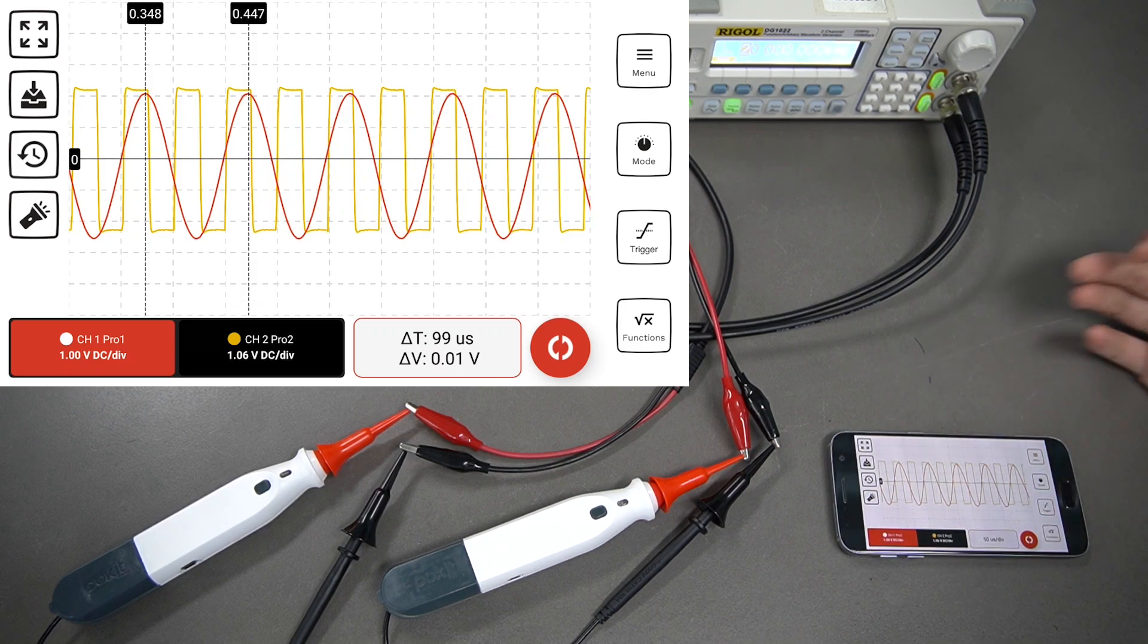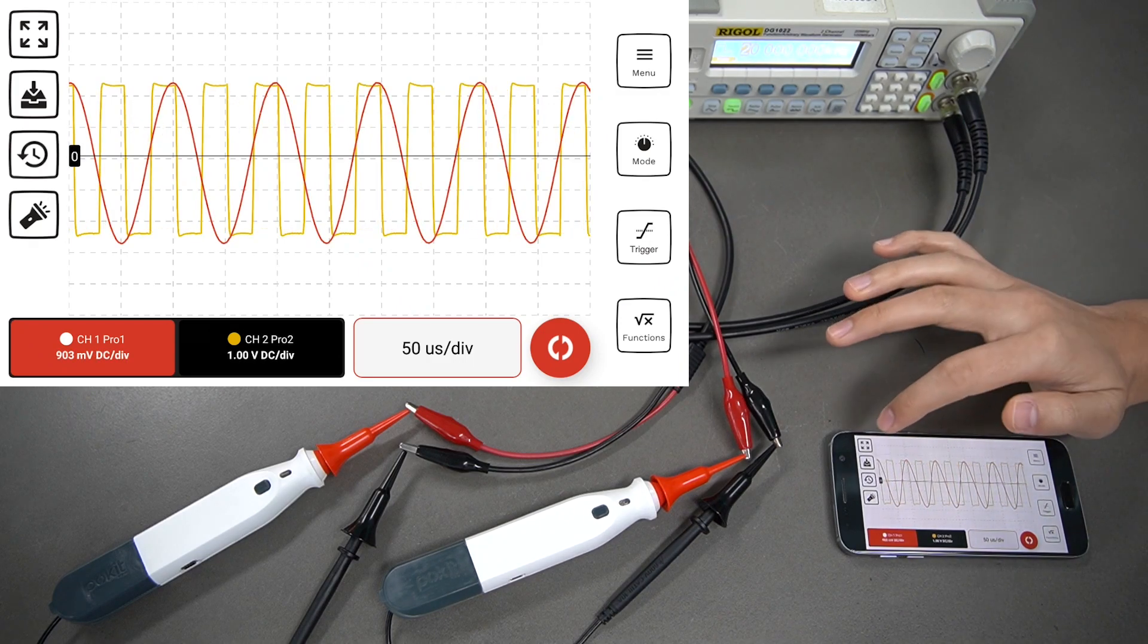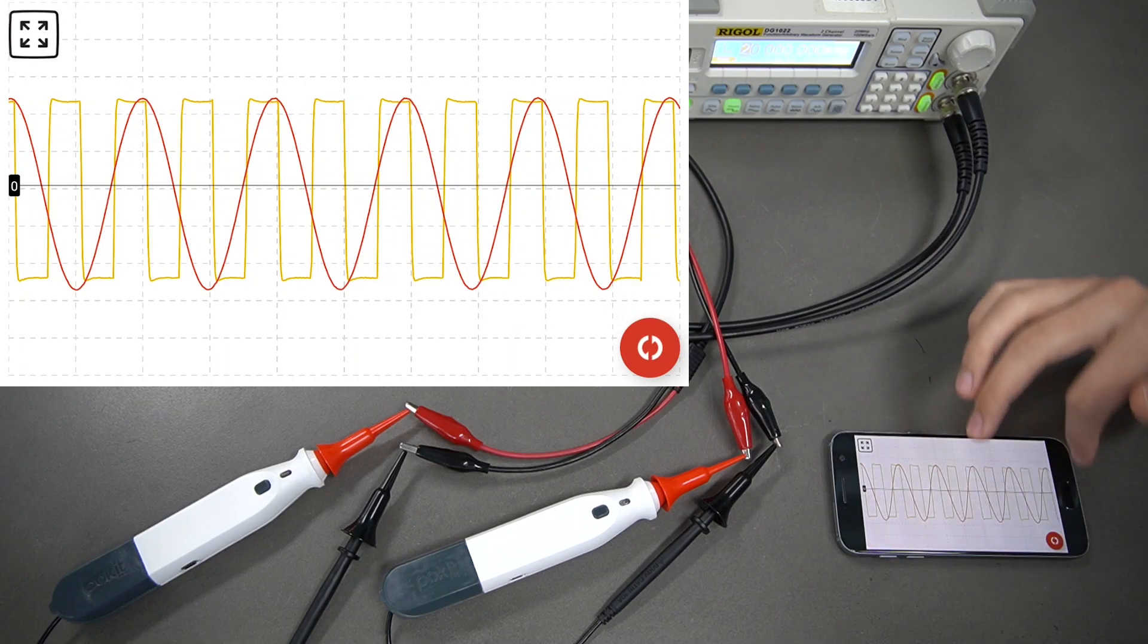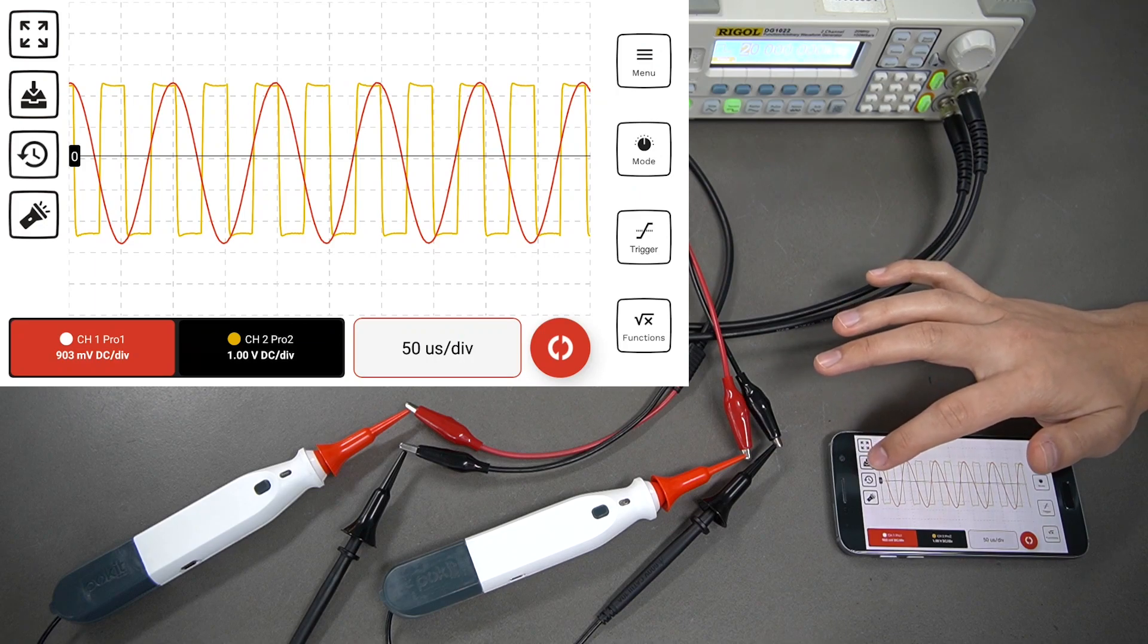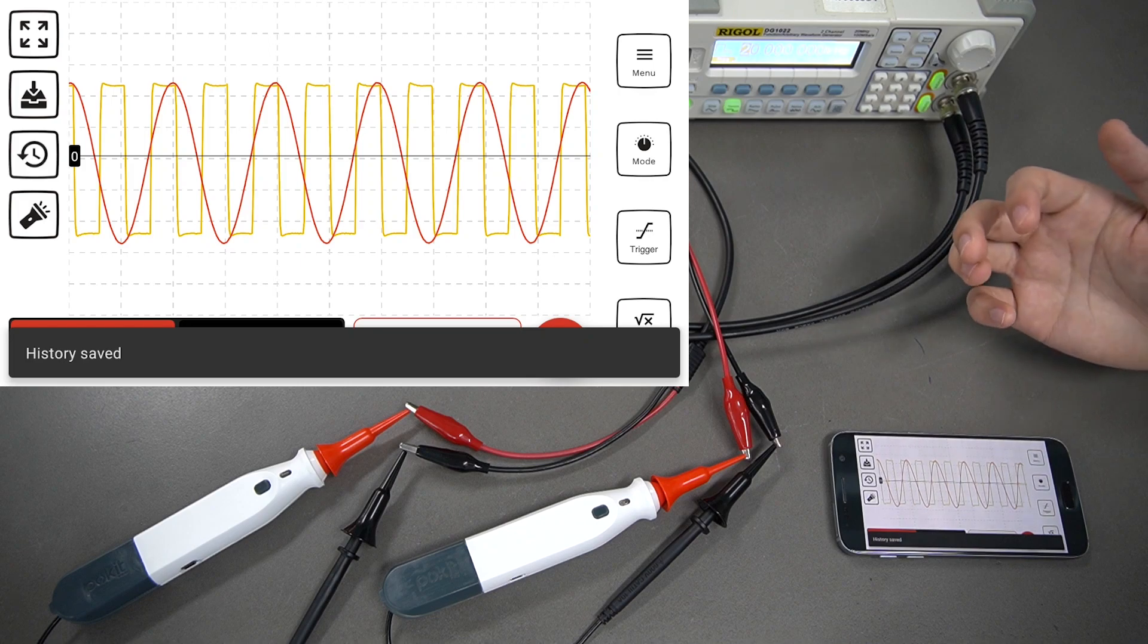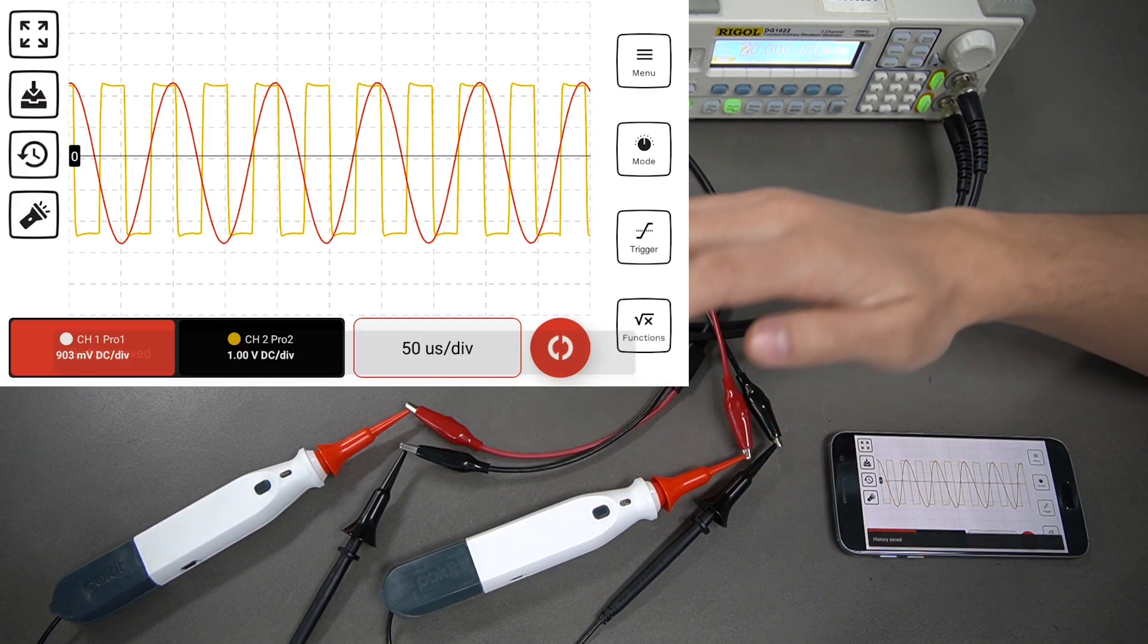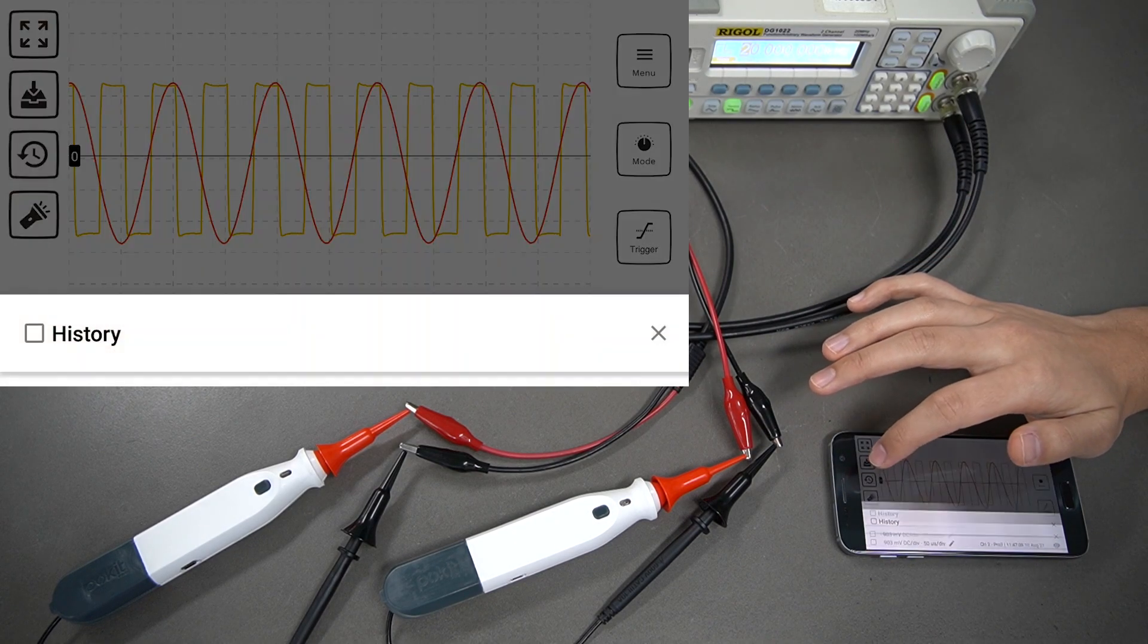To get rid of those, you just hold anywhere else on the screen and they'll disappear. We've got a few different buttons over on the left here as well. You can select that one on the top left to put it into full screen mode. That'll just get rid of all the buttons around the side. You've also got the save button, which is just underneath. That'll just save your waveform there. You can also press the button on the top of your Pocket Pro unit to do this. That's saved. The next button underneath is the history tab.